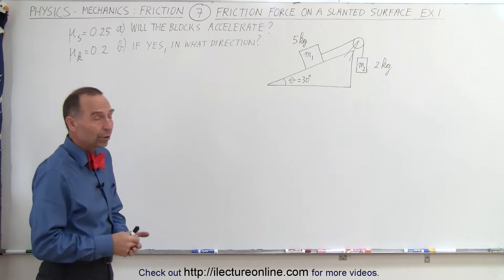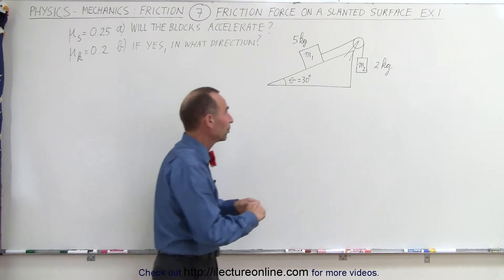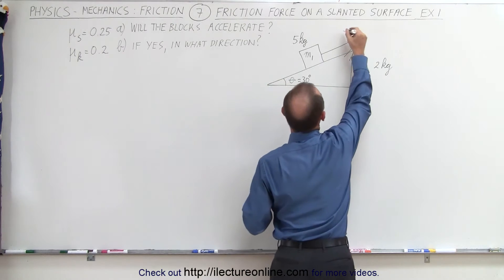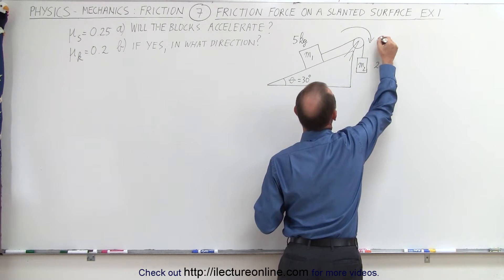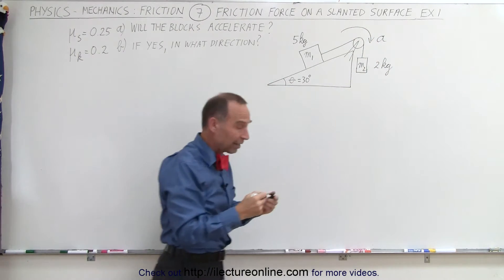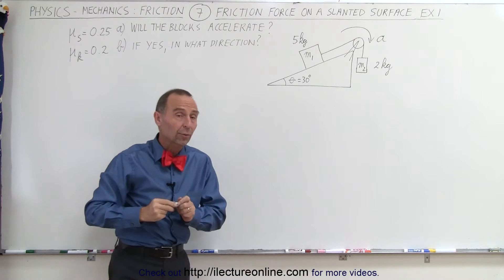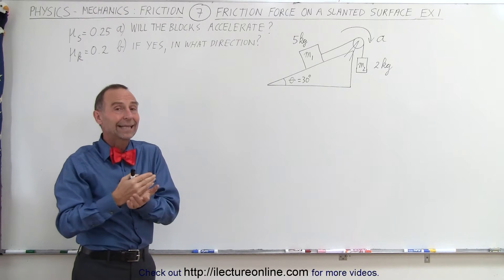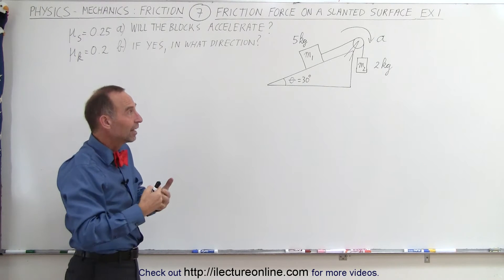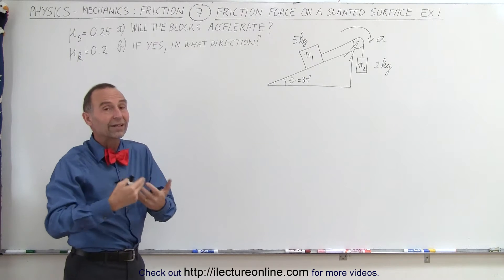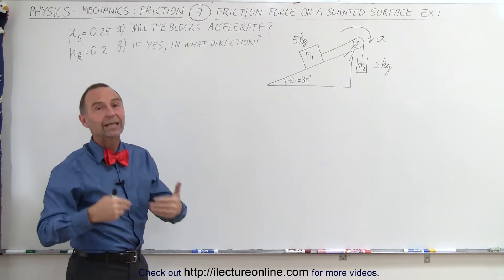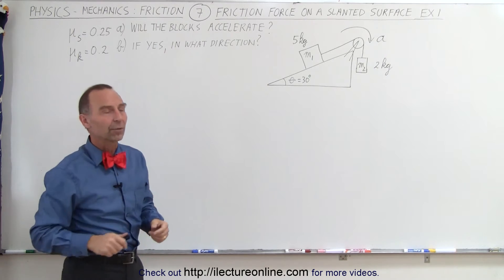We're not sure what the direction of the acceleration would be if there's an acceleration, so we're going to take an assumption. We're going to start out by saying what if the acceleration is in this direction, and we're going to work it out as if that acceleration exists. We're going to calculate the net force, and if the net force is greater than zero in that direction then there will be an acceleration.